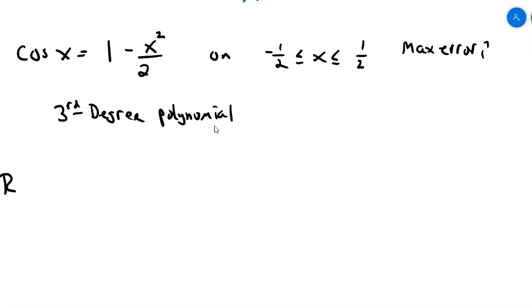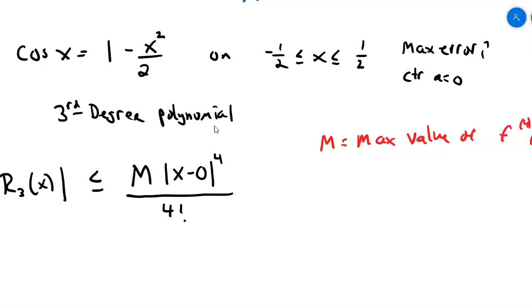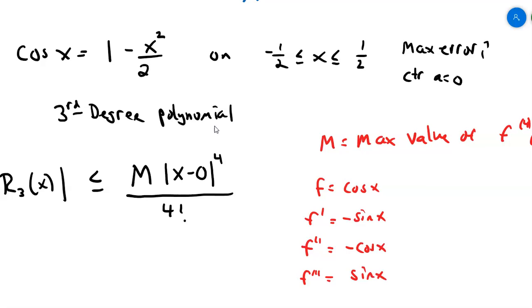The Remainder Estimation Theorem says the remainder, by stopping at degree 3, in absolute value, is going to be less than or equal to M times x minus a to the 3 plus 1 — the fourth power — over 4 factorial. This series is centered at a equals zero, so it's x minus zero to the fourth power over 4 factorial. Now let's figure out what M is. M is the maximum value of the fourth derivative. The original function is cosine of x, so: first derivative is negative sine of x, second derivative is negative cosine of x, third derivative is sine of x, and the fourth derivative brings us back to cosine of x.